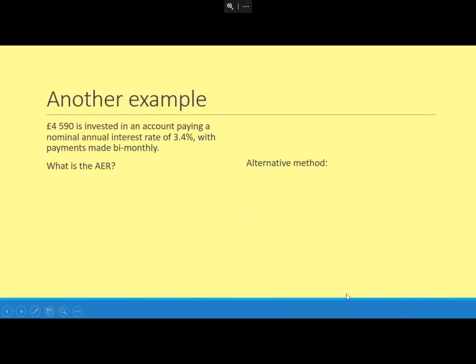Here's another example. You'll have to ignore that—that comes up later. So £4,590 is invested in an account paying a nominal annual interest rate of 3.4%, and the payments are made bi-monthly, every other month. What's the AER? Bi-monthly, every other month, so six times a year, every two months if you like.